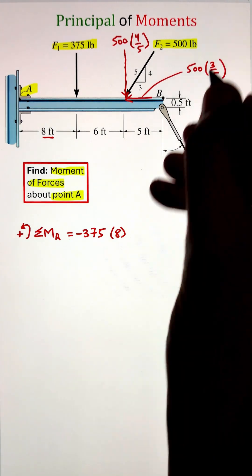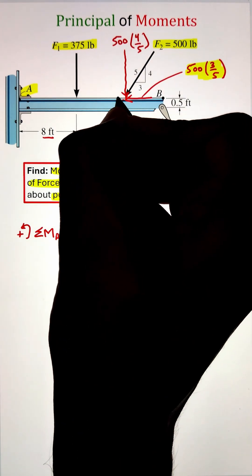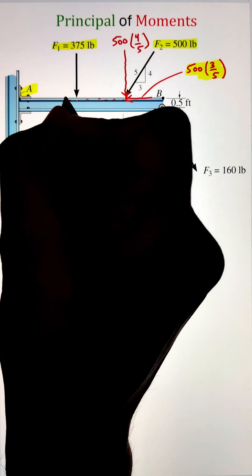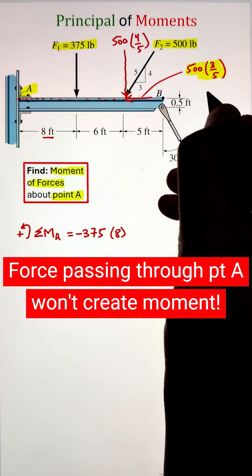This is basically the sine theta that we are multiplying 500 with. Similarly, we can project it along the horizontal axis by multiplying 500 with 3 over 5. Once we have the components, let's figure out what moment they make.